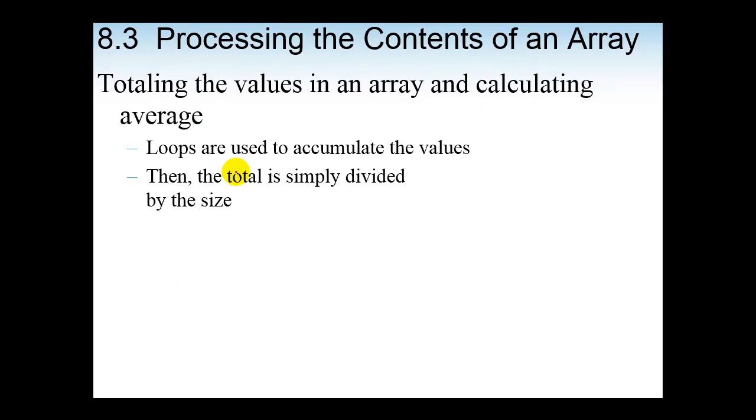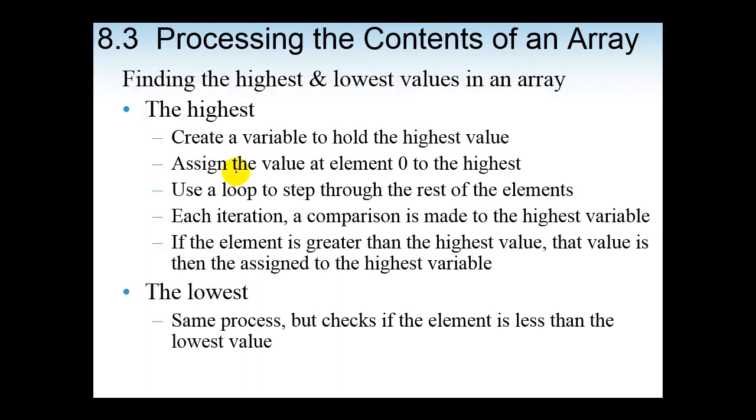The next part of the chapter we talk about is processing the contents of an array. And we talk about totaling the values in an array and calculating average in this section. The loop steps through an array adding the value of each array element to the accumulator using an accumulator variable. Then when we go to average, we are going to then take that total and that is going to be divided by the size. You can see examples of each of these in program 8-9 for calculating the total value. And then for calculating the average, look at program 8-10. You can then look at 8-11 for finding the highest values in an array and 8-12 for finding the lowest values in a given array.